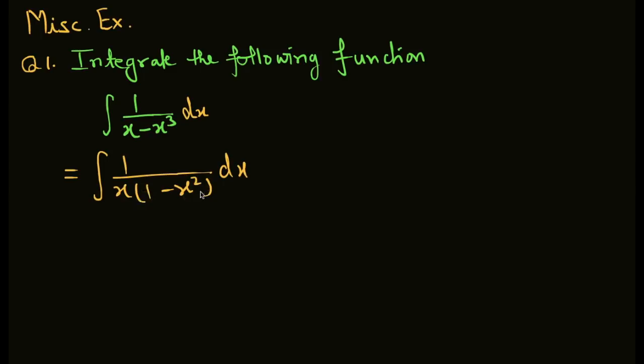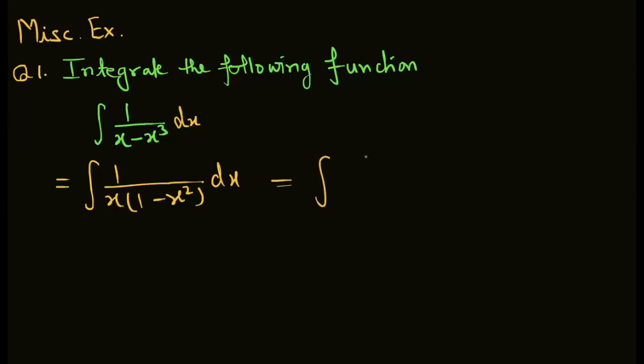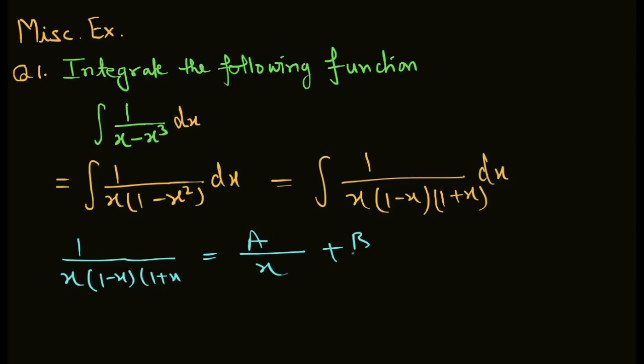This equals integration 1 upon x into (1 minus x squared) dx, which we can split as 1 upon x(1 minus x)(1 plus x) dx. We can write this as A upon x plus B upon (1 minus x) plus C upon (1 plus x).